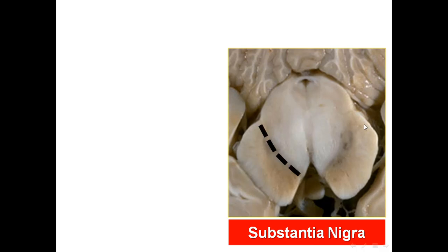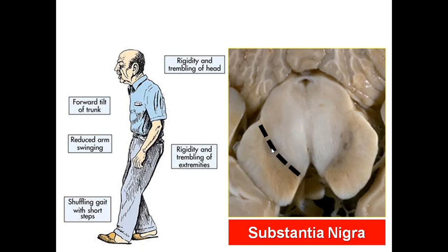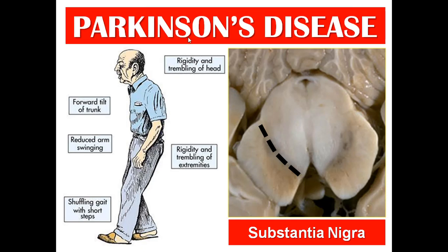In another cross-section of the midbrain: the cerebral aqueduct divides the midbrain into the tectum (posterior) and the cerebral peduncle (anterior). The cerebral peduncle is divided into: crus cerebri (most anterior), substantia nigra (middle), and tegmentum (posterior). The substantia nigra contains dopamine-secreting neurons from the pars compacta. If these neurons are affected by a lesion, it leads to Parkinson's disease — Parkinson's disease is associated with degeneration of the substantia nigra.